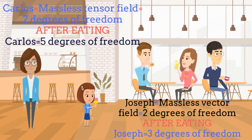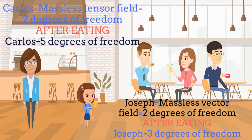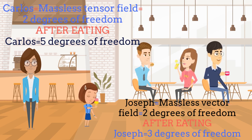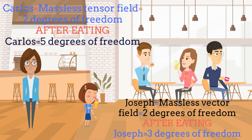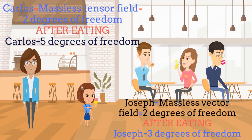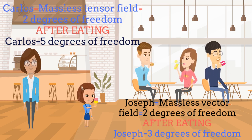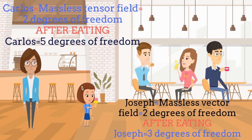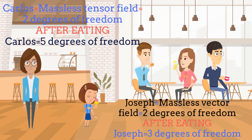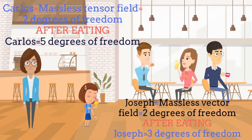Thanks, Erika — yes, indeed, you are right. Inside this pedagogical game, if we repeat the same argument with Joseph, who is initially a massless vector field with 2 degrees of freedom, then he would become massive after drinking his coffee, which carries 1 Nambu-Goldstone boson and, as a consequence, 1 degree of freedom. After his coffee, he will then carry 3 degrees of freedom in total.